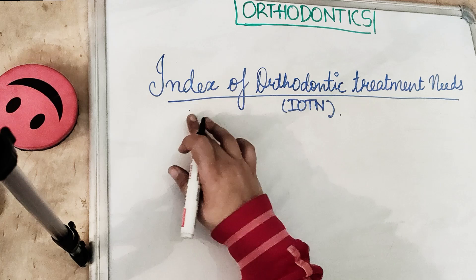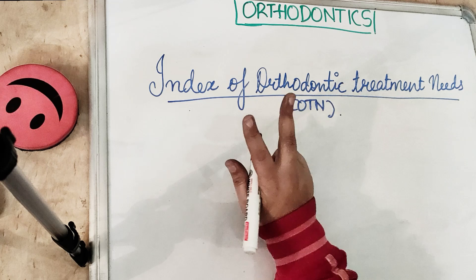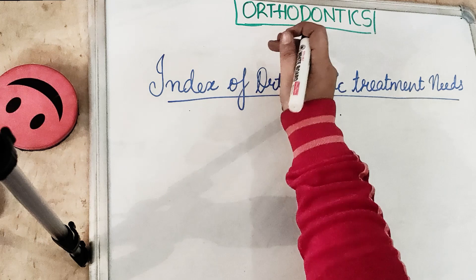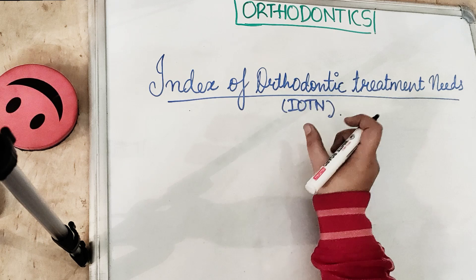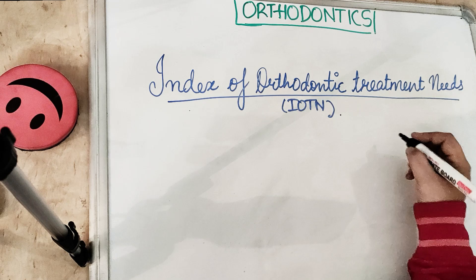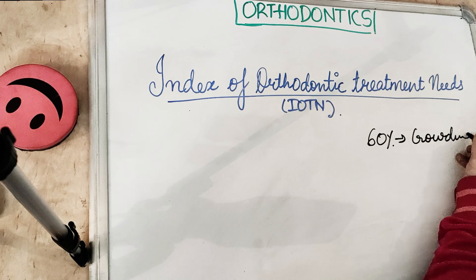Welcome back to our channel. Today we'll be studying the Index of Orthodontic Treatment Needs. People seek orthodontic treatment for two reasons: one is for looks and the other is for function. Orthodontics is a science and a branch of dentistry which deals with the development of the face, development of the dentition, and prevention and correction of any occlusion abnormality.